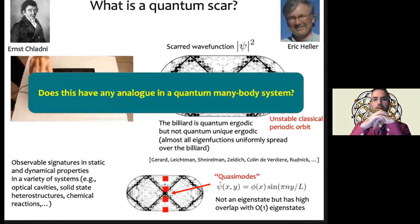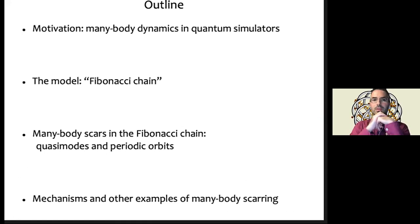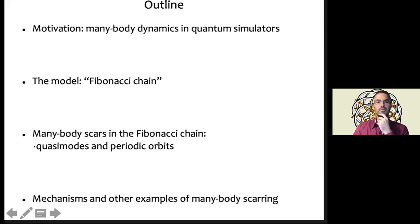The purpose of this talk is to ask: does quantum scarring have any analog in quantum many-body systems — not a single particle in a stadium billiard, but a truly many-body interacting quantum system? The outline is: first, motivation; then a specific model where many-body scarring physics takes place; then details of that model; and finally a broader picture to identify mechanisms and other examples.